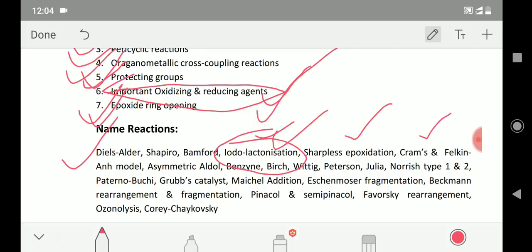Then asymmetric aldol like the proline-catalyzed aldol or normal asymmetric aldol with Evans catalyst. That question also comes. Benzyne, Birch reduction, Wittig reaction, Peterson elimination, Julia olefination.